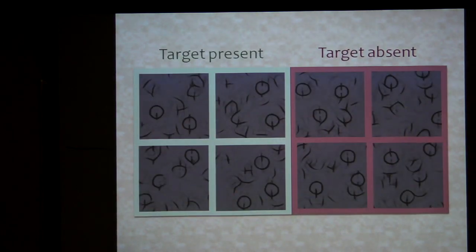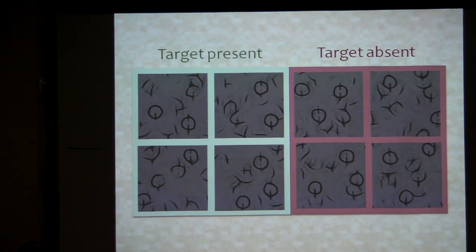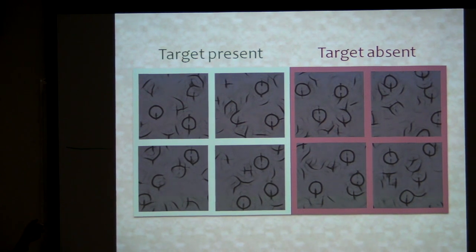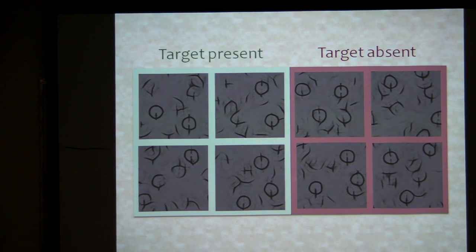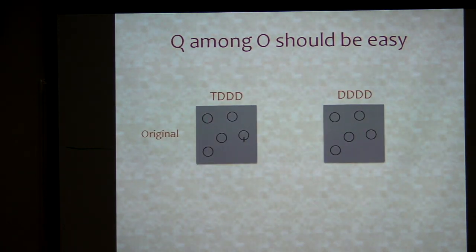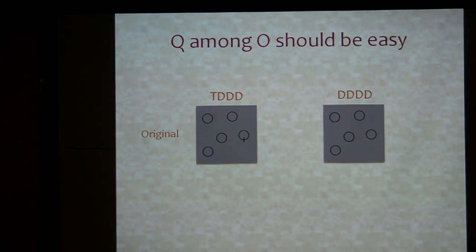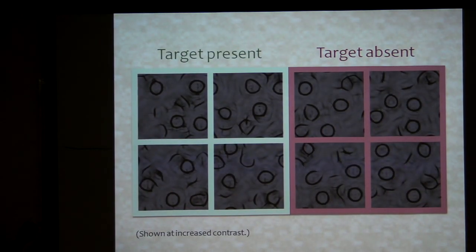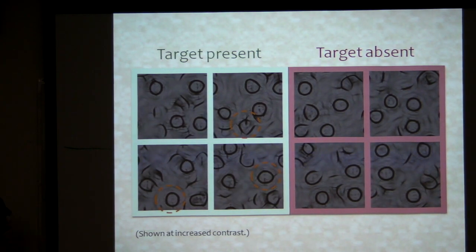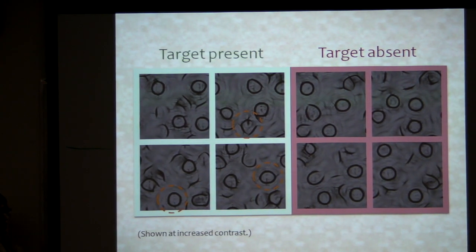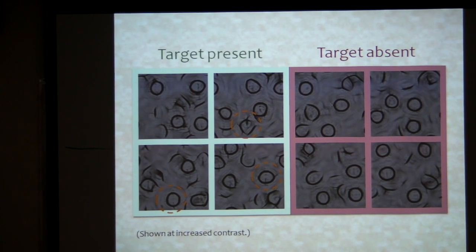O among Q should be difficult, and our subjects really pull out their hair on this task. Q among O should be easy, and while not as easy as the tilted-among-vertical condition, there are definitely some Q-like things floating around in the target-present that make this possible.